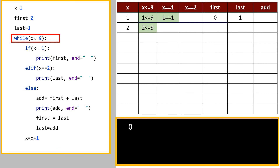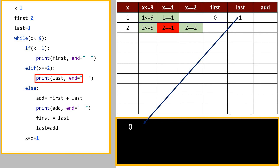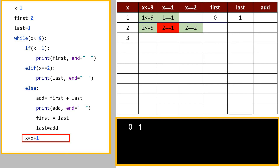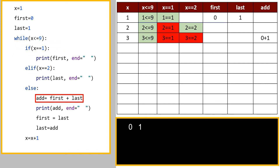2 is less than equal to 9 — yes, true. x equal equal to 1 — value of x is 2, 2 equal equal to 1 — no, so it skips print first. It checks elif x equal equal to 2 — yes, true — so it prints value of last variable, which is 1. x increments to 3. 3 is less than equal to 9 — yes. 3 equal equal to 1 — no. 3 equal equal to 2 — no. It moves to the else part because both conditions were false.